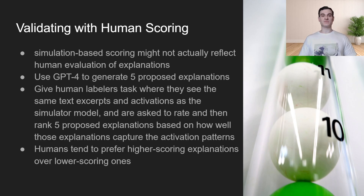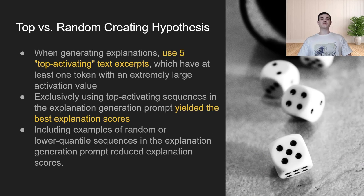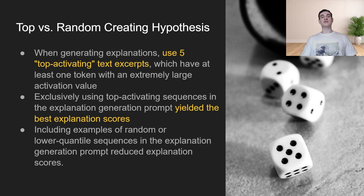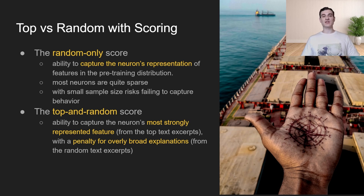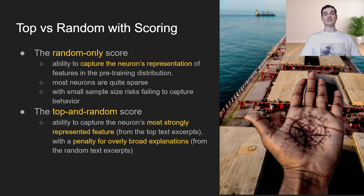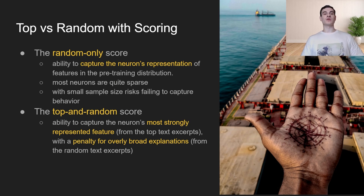This is a good sign that the natural language explanations GPT-4 is coming up with are human understandable. Another thing they considered: when creating the hypothesis, should they use sequences where activations are in the top percentile, or random sequences? They found that using top activating sequences consistently generated a better hypothesis than picking random sequences, and including low quantile sequences actually reduced the explanation score. As for scoring the dataset, random-only scoring gives a better understanding of general performance, but many sequences may be sparse with no real activation. The solution was to do top and random scoring, showing the ability to capture the neuron's most activating behavior while also giving a snapshot of general dataset performance.